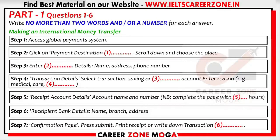Then we'll move on to transaction details. So, this is where I select the account that the money comes out of? Yes. You have a transaction account, a savings account and a business account. Which one did you want to choose? It had better be my savings account. OK. Have you clicked on that? Yes. But next it says enter a payment reason.